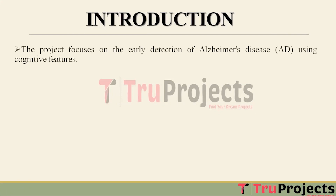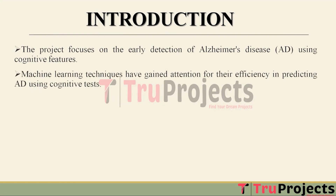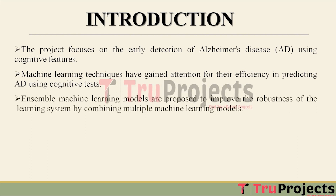Early detection is crucial for timely intervention and improved patient outcomes. Machine learning techniques have garnered attention due to their effectiveness in predicting Alzheimer's disease (AD) using cognitive tests. These techniques are used to analyze data and identify patterns that may indicate the presence of the disease.